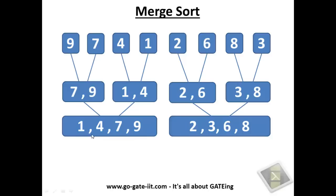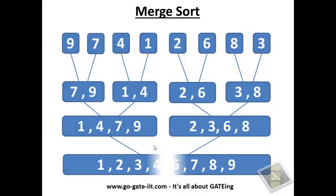So we now have 2 blocks, which will be merged to give a single block of elements. And finally, you can see here that 1, 2, 3, 4, 6, 7, 8, and 9 — this is the sorted list of numbers after merge sort has happened. This way, we sorted an unsorted sequence of numbers.